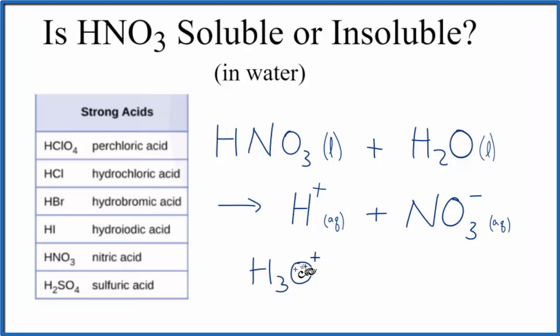Either way, they're really considered the same things when we're talking about this nitric acid dissolving in water. So to recap, we have our nitric acid, it's a strong acid, so that means it's going to dissociate, break apart into its ions like we have here, the H+ and the NO3-. That means that nitric acid is going to be soluble in water.